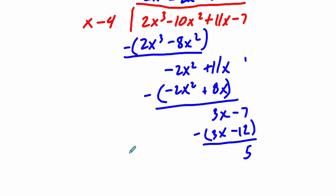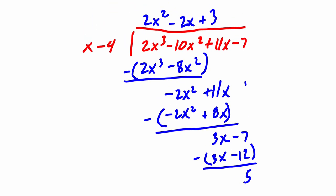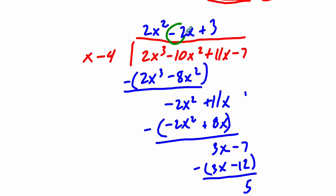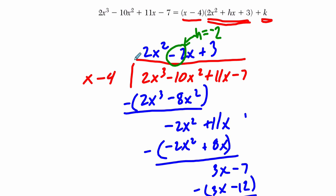Now, this tells you everything you need to know, because here, this is our h term. h equals negative 2. This is the trinomial we multiply x minus 4 by. Sorry, this is the trinomial we get when we divide our polynomial by x minus 4, and that's the h term, it's the middle term here.